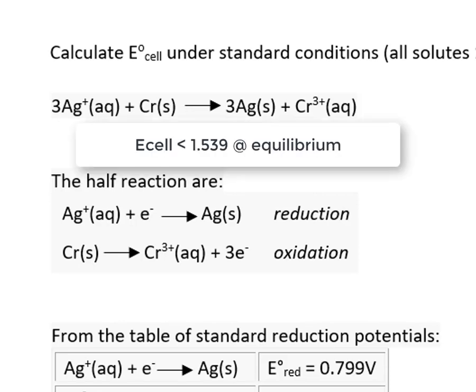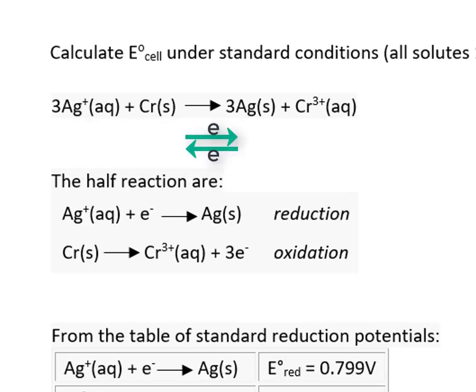An electrochemical cell that has reached equilibrium is analogous to a dead battery. Because the forward and reverse rates of reaction are equal, there is no net forward flow of electricity nor is there a net reverse flow of electricity.